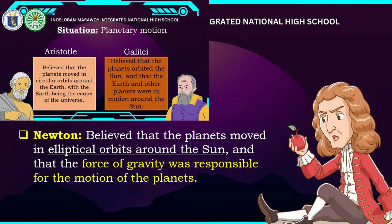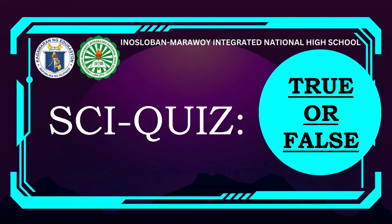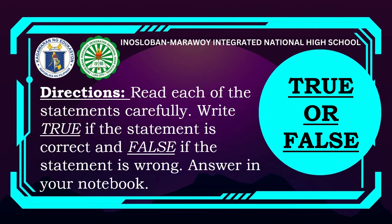I hope that you learned something about the different views of Aristotle, Galileo, and Newton about motion. To check if you really learned something, let's have a short quiz. All you have to do is write true or false. Read each statement carefully — write True if correct and False if wrong — in your notebook.